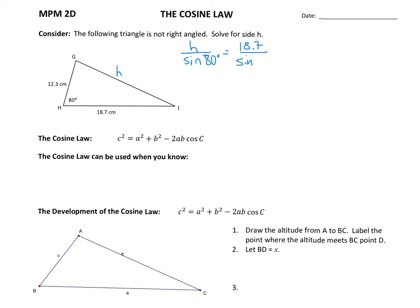And that is equal to 12.3 divided by the sine of angle I. Again, we don't have angle I.